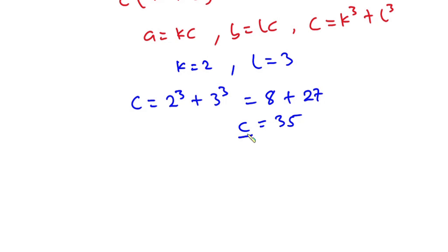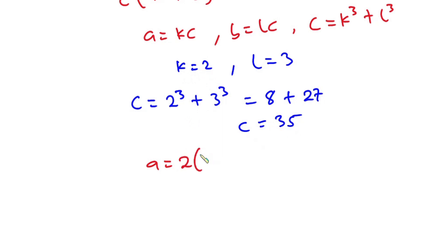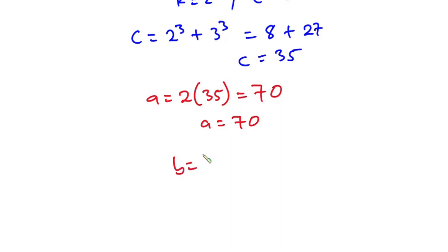Now that we know the value of c we can easily find a and b. When c is equal to 35, a is equal to kc, where k is 2, so a equals 2 times 35, which is 70. Then b is equal to lc, where l is equal to 3 and c is 35, so 3 times 35 is 105. So b is equal to 105.